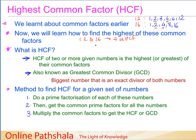Let us formally define the Highest Common Factor. The HCF of two or more given numbers is the highest or greatest of their common factors. HCF is also well known as GCD — Greatest Common Divisor. This name is intuitive because GCD is the biggest number that is an exact divisor of both numbers, meaning dividing both numbers by the HCF yields the smallest possible quotients.